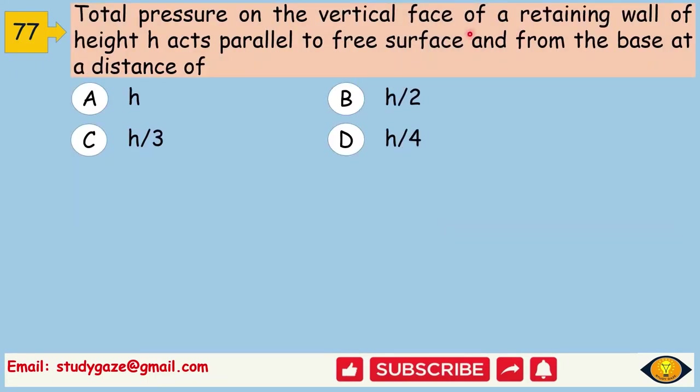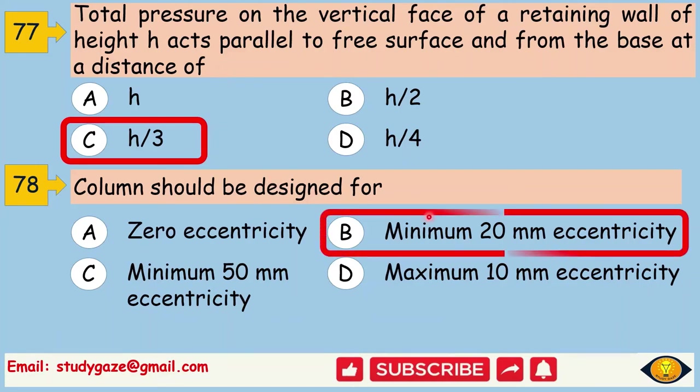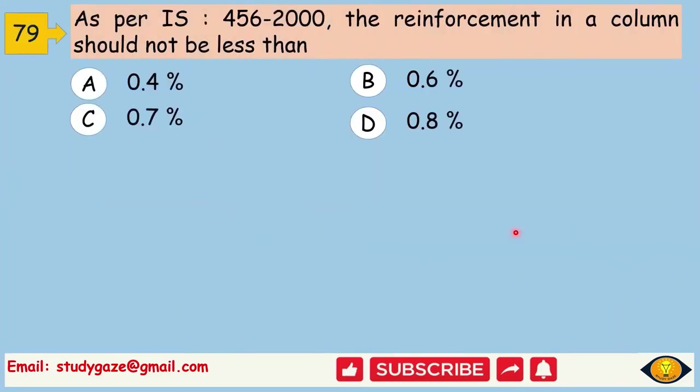Total pressure on the vertical face of retaining wall of height h acts parallel to free surface and from the base at a distance of. Answer is h by 3. Column should be designed for. Answer is minimum 20 mm eccentricity. As per IS 456-2000, the reinforcement in a column should not be less than. Answer is 0.8%.